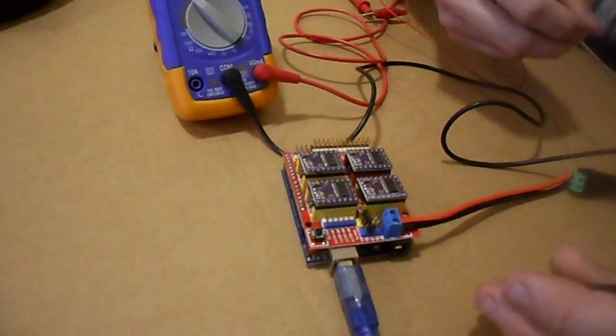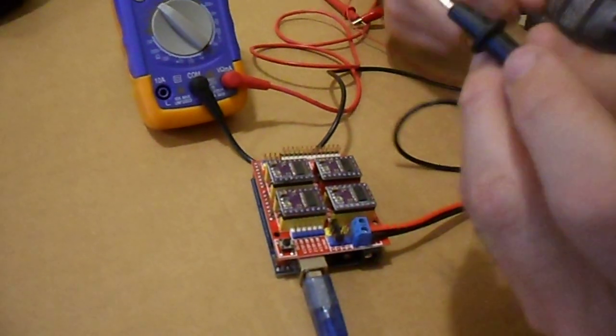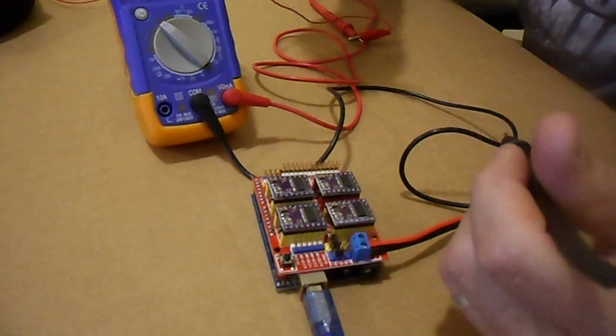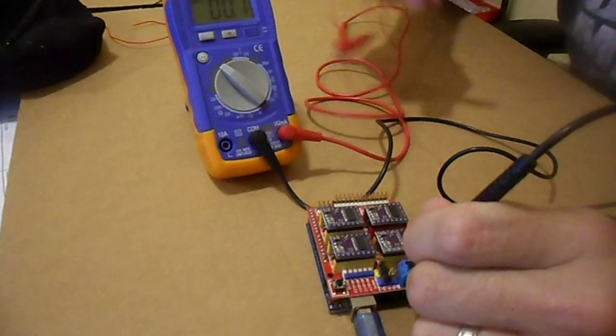All right, then you're going to plug it up with your barrel adapter. You're going to take your black lead and you're going to put it right here on the negative screw terminal.